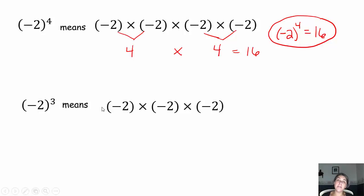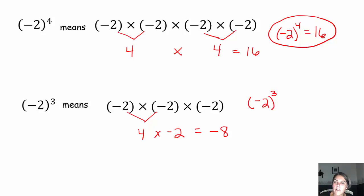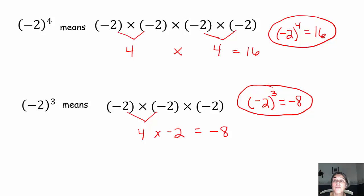Negative 2 to the third power means negative 2 times negative 2 times negative 2. Negative 2 times negative 2 — a negative times a negative is a positive — 2 times 2 is 4. Times negative 2 — a positive times a negative is a negative — 4 times 2 is 8. So negative 2 as your base raised to the third power, multiplying it by itself 3 times, gives a simplified answer of negative 8. Sometimes when you start with a negative base and raise to a power, you come up with a negative answer.